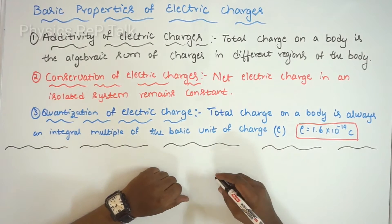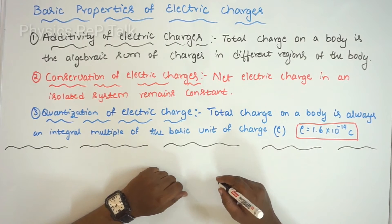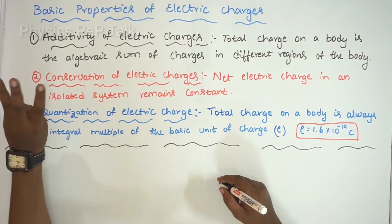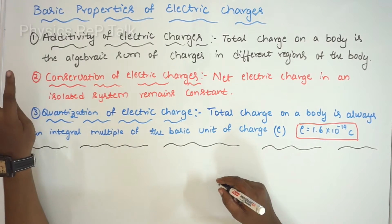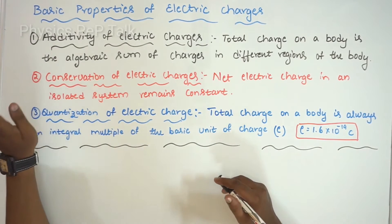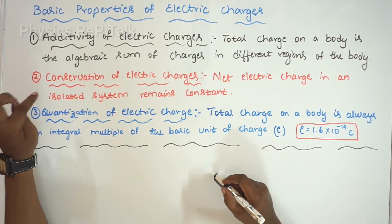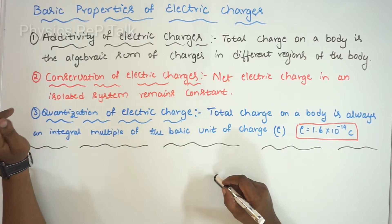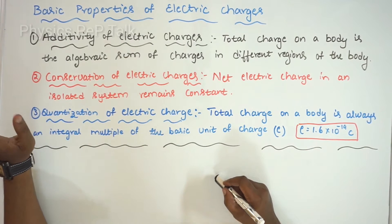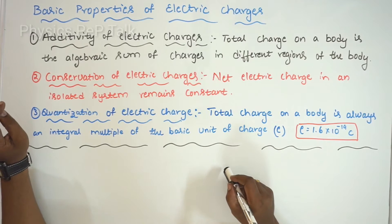Basic properties of electric charges. There are three basic properties: first, additivity of electric charges; second, conservation of electric charges; and third, quantization of electric charge.